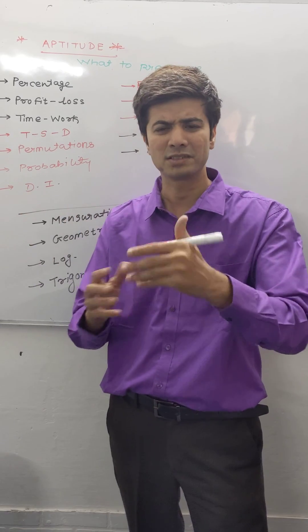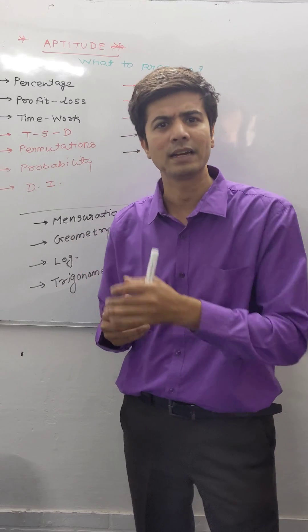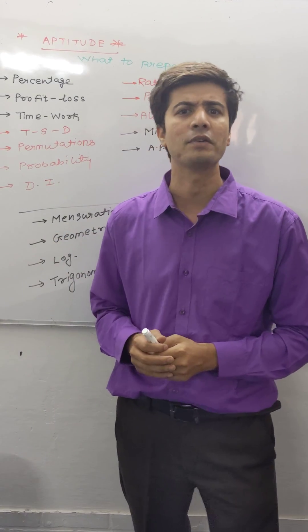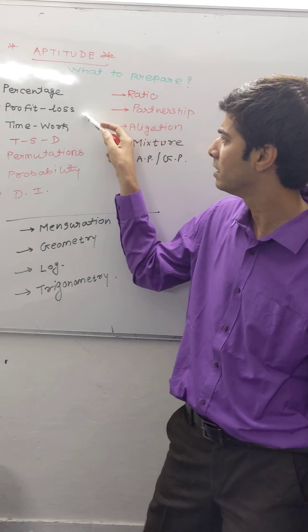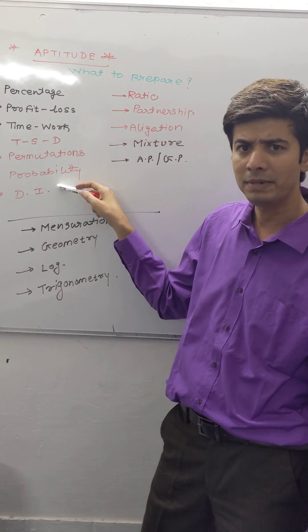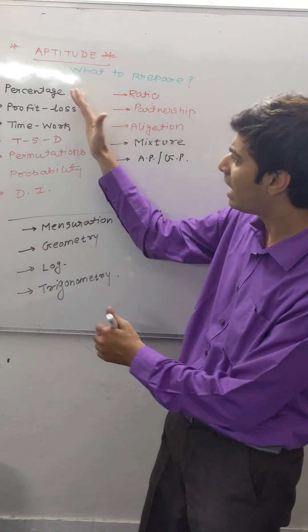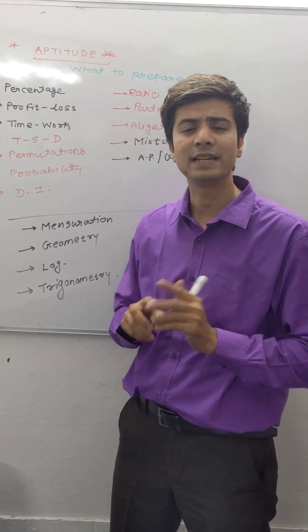So now, in today's short session, let us understand how to prepare aptitude. Taking the list: percentage, profit and loss, time and work, speed and distance, permutation, probability, and graphs. These 7 chapters are the heart of any placement session.